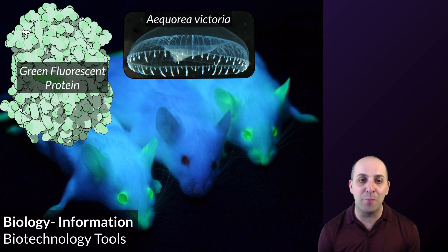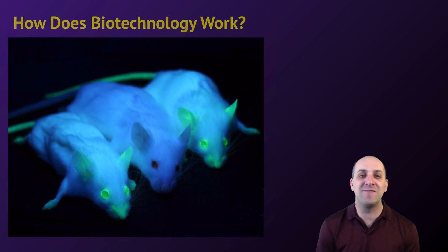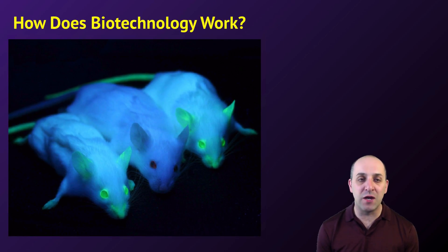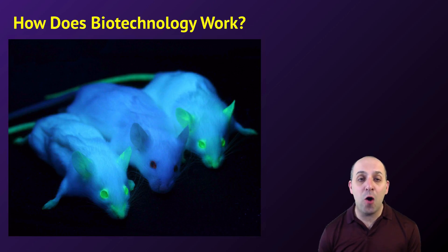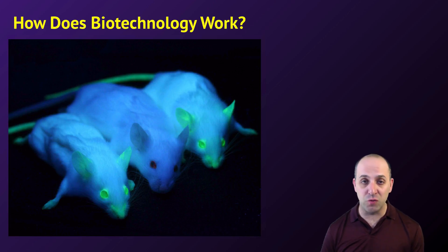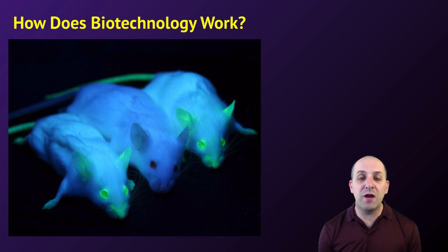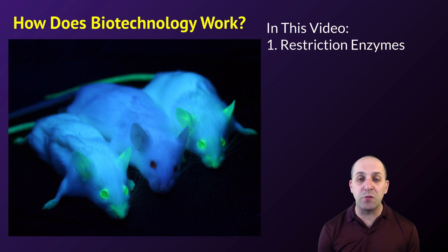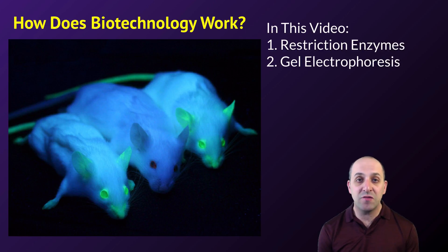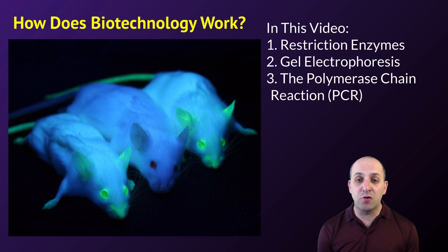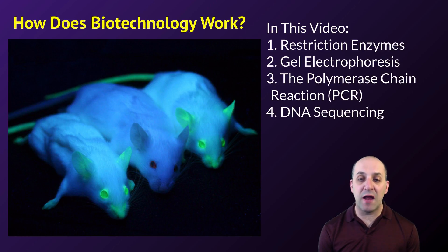That's just one example of the kinds of things that we can do in biotechnology. The purpose of this video is to investigate how biotechnology works. We're going to look at four different examples: restriction enzymes, gel electrophoresis, the polymerase chain reaction, and DNA sequencing.